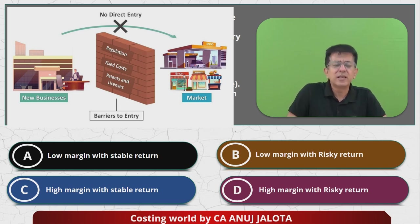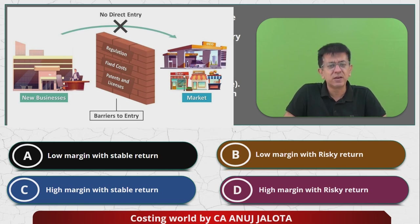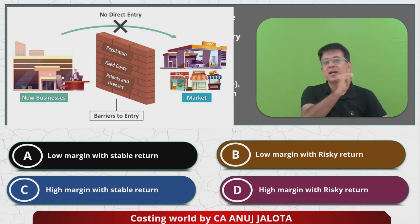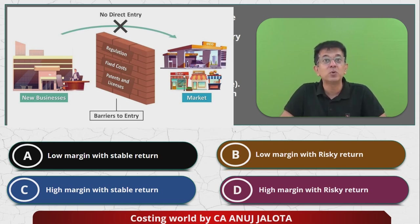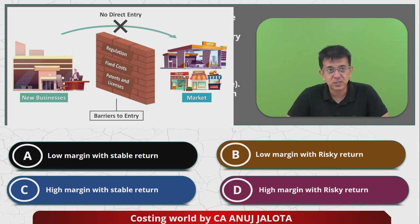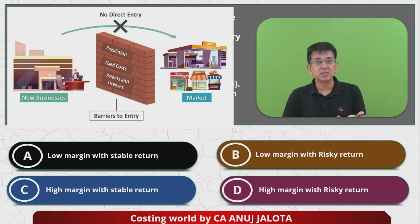There are other barriers to entry like fixed costs. Suppose tomorrow I try to become a telecom company like Jio, Bharti, or Vodafone — the amount of fixed costs involved is huge. High fixed costs can give you enormous returns, but they can also be devastating if the business does not do well. And lastly, patents and licenses: you cannot go and manufacture any type of medicine because patents and licenses are required for that.